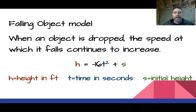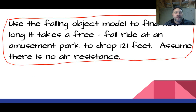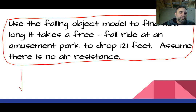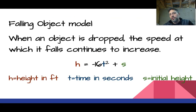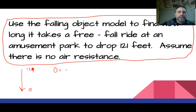The falling object model: when an object is dropped, its speed continues to increase. The equation is H equals negative 16 T squared plus S, where H is height in feet, T is time in seconds, and S is your initial height. Let's try one: a free fall ride drops 121 feet, and we want to find when it reaches the ground — that's H equals zero. So: zero equals negative 16 T squared plus 121.